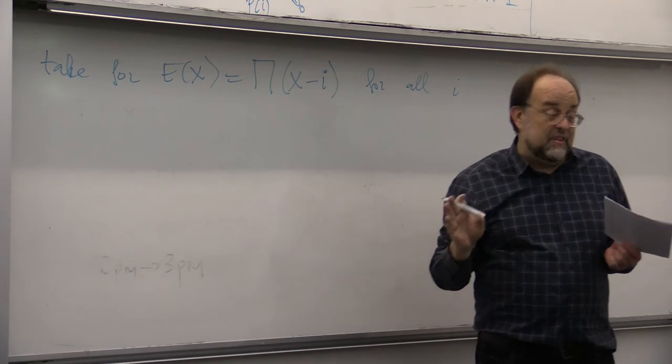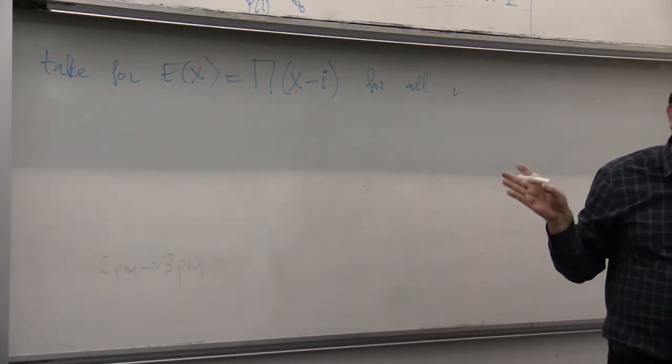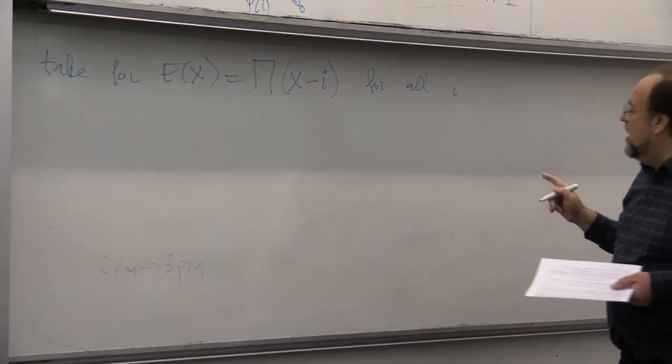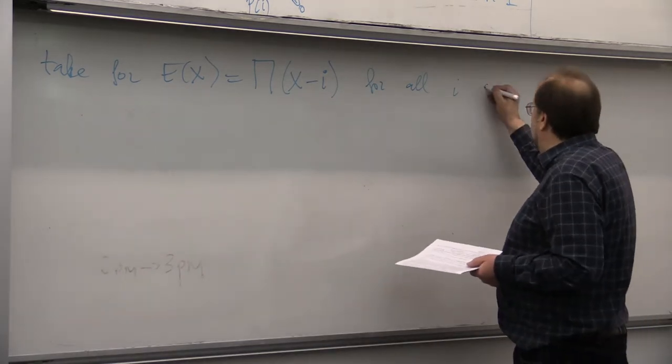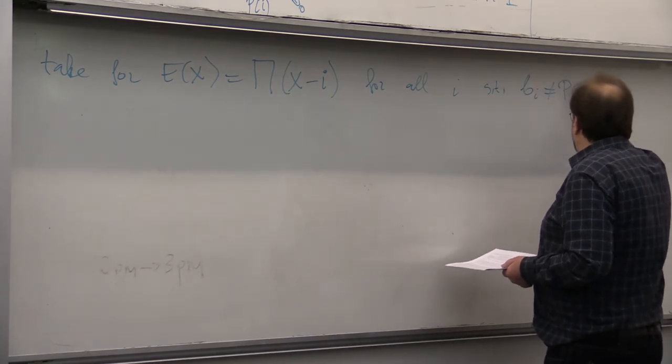Now, this is, we just proved the existence. I didn't tell you how to get them, right? So, for all I such that P is not equal to P of I.